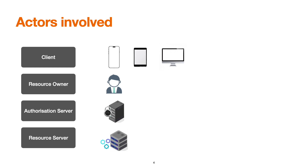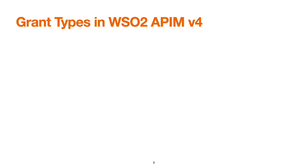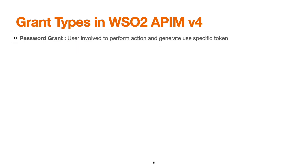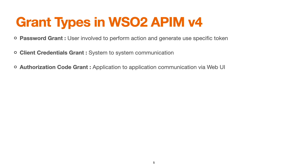Now we'll see different grant types in WSO2 API Manager — a quick overview of all the grant types supported with a sample use case. The password grant type is used whenever a user is involved to perform an action, for example when a user-specific token needs to be generated. Next, we have the client credentials grant type, which is used for system-to-system or machine-to-machine communication. The authorization code grant is typically used when two applications interact with each other through a web UI with web redirection involved.